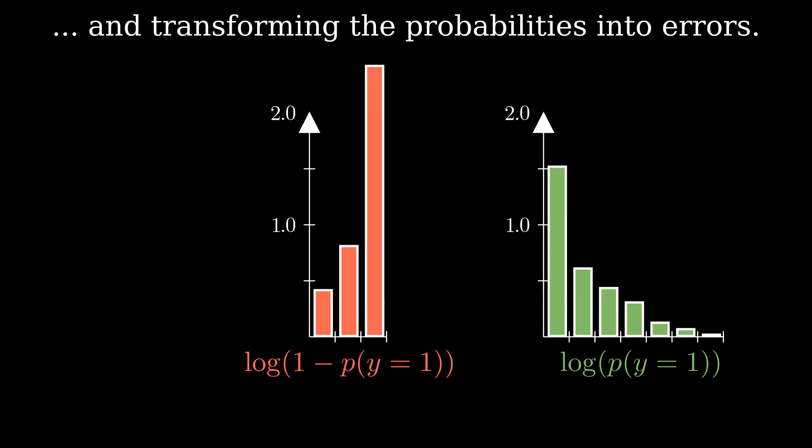This is expected, since these bars are the ones the logistic regression is less confident about. There we have it. Each bar represents the error computed for a given data point. Now we can aggregate them into a loss. Let's move back to the binary cross-entropy's formula, step by step.